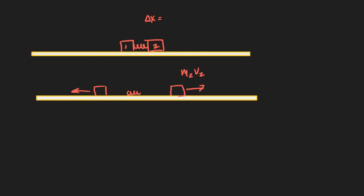The momentum of box two is M₂ times V₂, and box one is M₁ times V₁. Their sum has to equal the momentum before the spring was released, which was zero. If they weren't moving before the spring was released, momentum of the system was zero before. So the net momentum still has to be zero. This problem doesn't look like a collision, but it is. The spring had elastic potential energy before, and now there's kinetic energy in both boxes after.